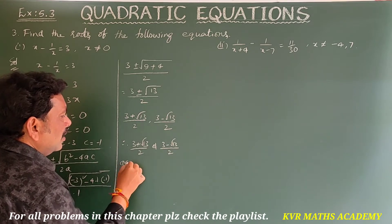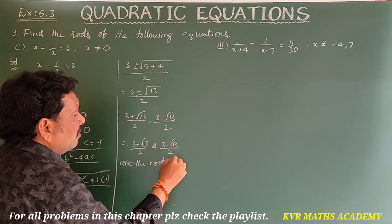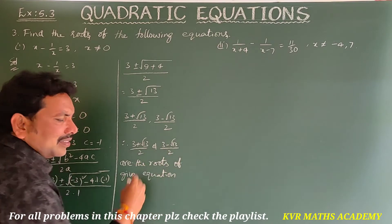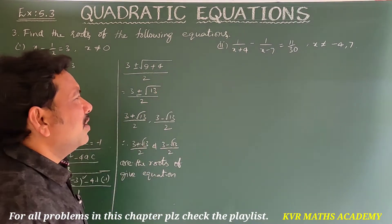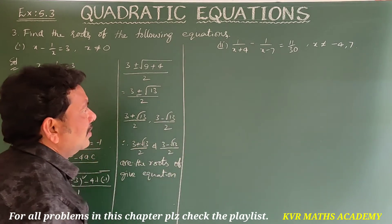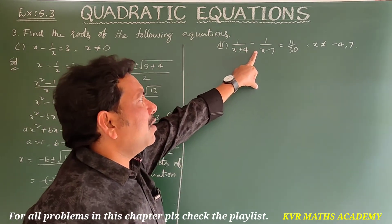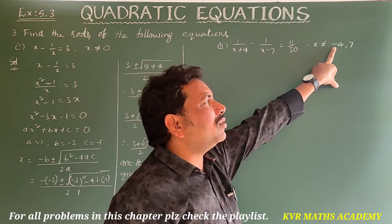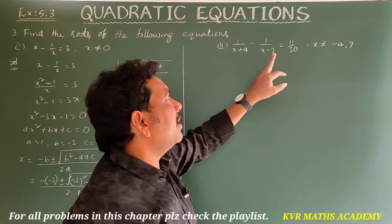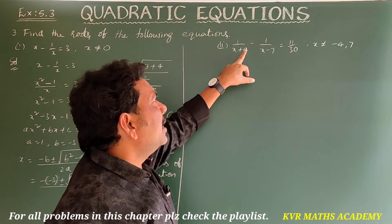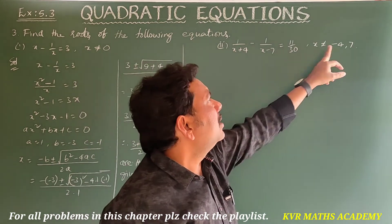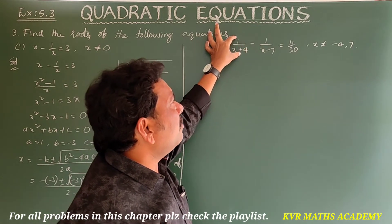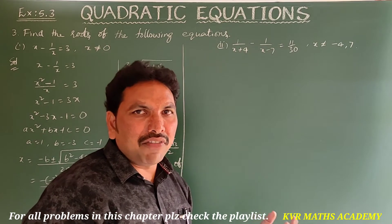Since plus or minus is there, the roots are 3 plus root 13 by 2 and 3 minus root 13 by 2. These are the roots of the given equation. Coming to the next one: 1/(x+4) minus 1/(x-7) equals 11/30, where x is not equal to minus 4 and 7. If x equals minus 4 or 7, the denominator becomes 0 and the equation is undefined.